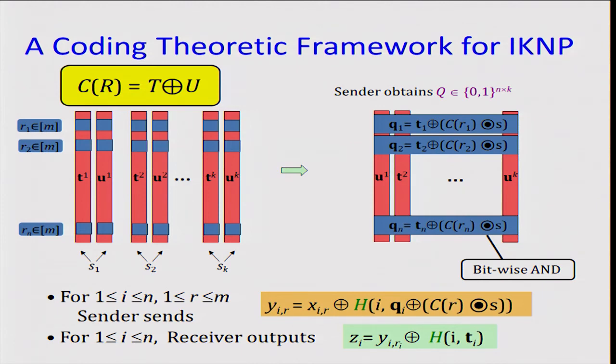Once again, the sender will obtain the result of the OT as a matrix Q. In the earlier IKNP case, we saw that QI was either TI or TI XOR S. So in this case, what happens is that we'll have QI equals TI XOR C of RI bitwise AND with S. It's not terribly complicated.